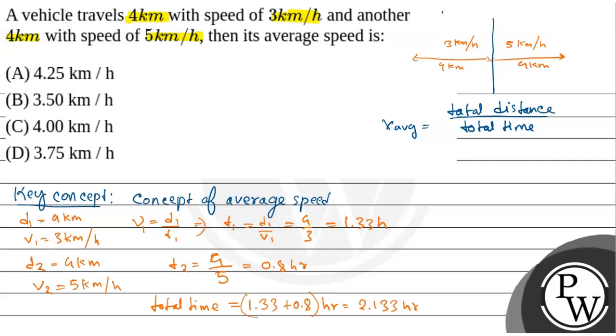So our average speed is total distance by total time. Total distance is 4 plus 4, that is 8, by total time, that is 2.133. That is equal to 3.75 km per hour.